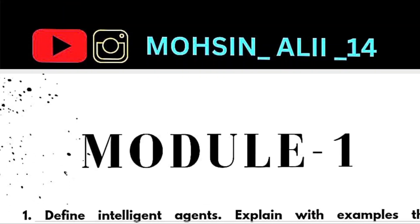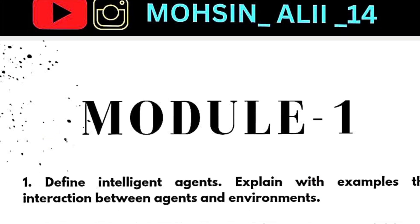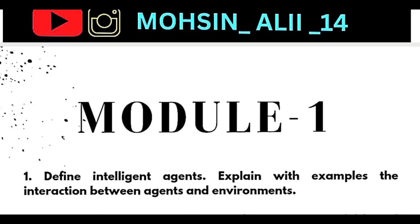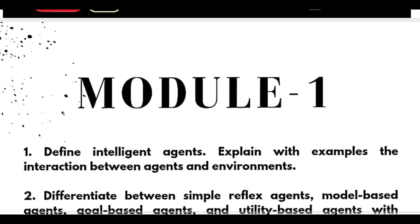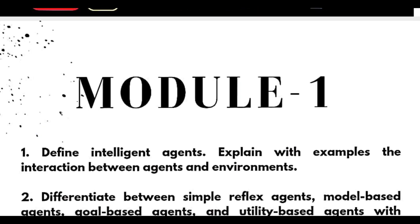There are three passing modules — the first, second, and third — which are comparatively easier than the fourth and fifth modules. Students who want to pass only can refer to these three modules fully and take two questions from the rest of the modules. Those who want to score higher can refer to these important questions from all the modules.